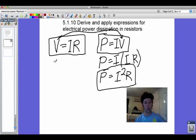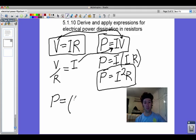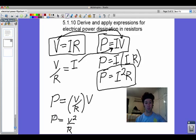Then you could also rearrange this if you needed to. Say that V over R is equal to I. And now we could, if we wanted to, plug in for I. So now another power equation is V over R and then this turns into V squared over R is equal to P.